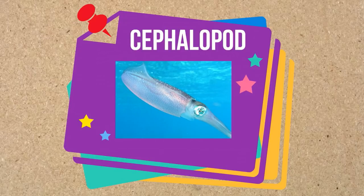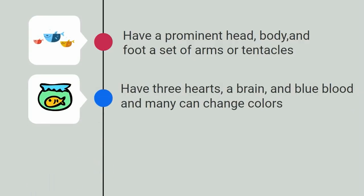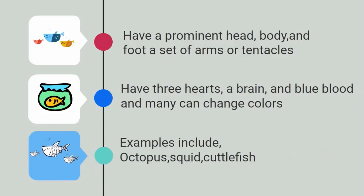And finally, let's take a look at the cephalopods. Cephalopods have a prominent head, body, foot, and a set of arms or tentacles. They have three hearts, a brain, blue blood, and many can change colors. Examples include an octopus, squid, and cuttlefish.